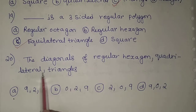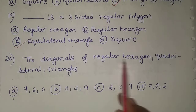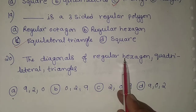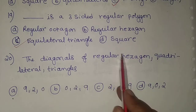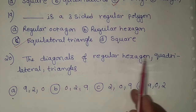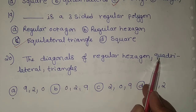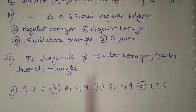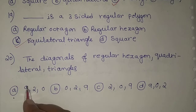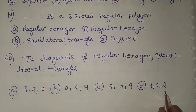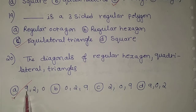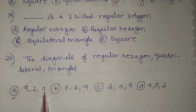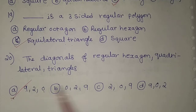The 20th problem: find the number of diagonals of a regular hexagon, quadrilateral, and triangle. As solved in the theory class, a hexagon has 9 diagonals, a quadrilateral has 2 diagonals, and a triangle has zero diagonals. So option A, in the order 9, 2, 0, is the correct answer.